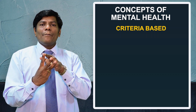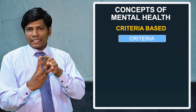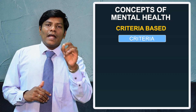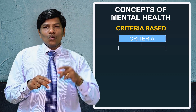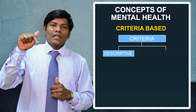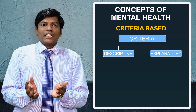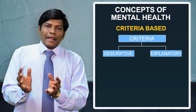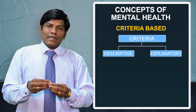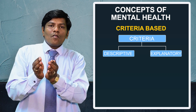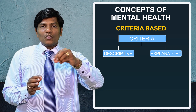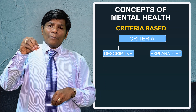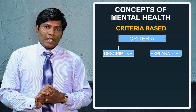Now, the criteria for normalcy and abnormalcy are divided into two types: descriptive criteria and explanatory criteria. Descriptive criteria simply tells what normalcy is — what is normal mental health. Explanatory criteria explores how abnormal behavior deviates from normal behavior — it explains the nature and degree of deviation from normal.